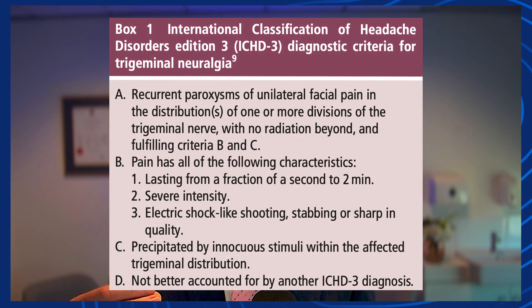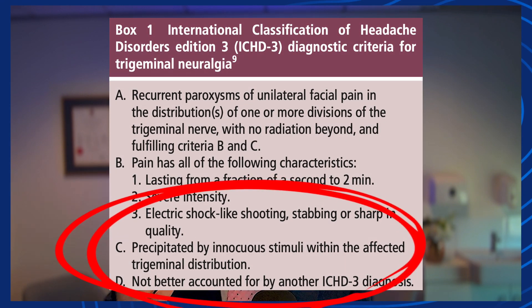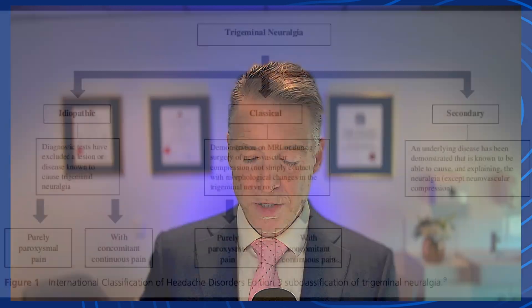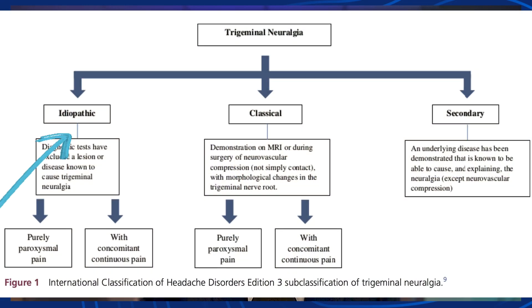There is usually a precipitating trigger — light touch, wind, brushing teeth, or something touching the mouth area. Interestingly, trigeminal neuralgia affects the right side of the face 60% of the time compared to the left, and we're not sure why. There are three types: idiopathic, classical, and secondary.